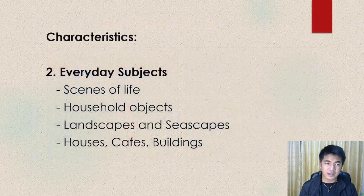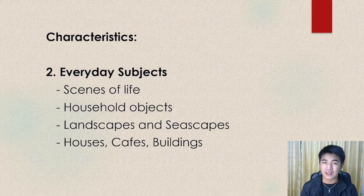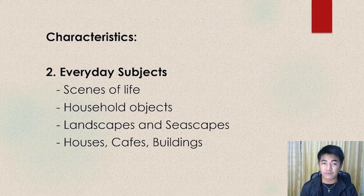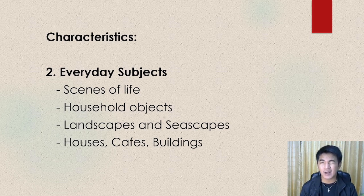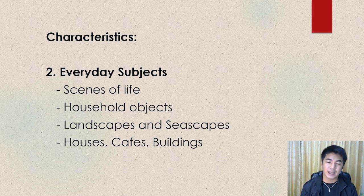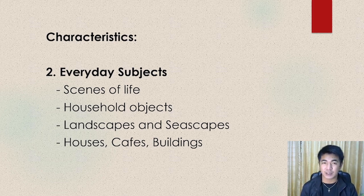The next characteristic of impressionism is everyday subject. The outputs from impressionism are actually scenes of life — events and activities in our daily lives — household objects or household chores. These are things found at home and activities we do daily. They also painted landscapes and seascapes, going outdoors. Houses, cafes, and buildings are among their subjects.